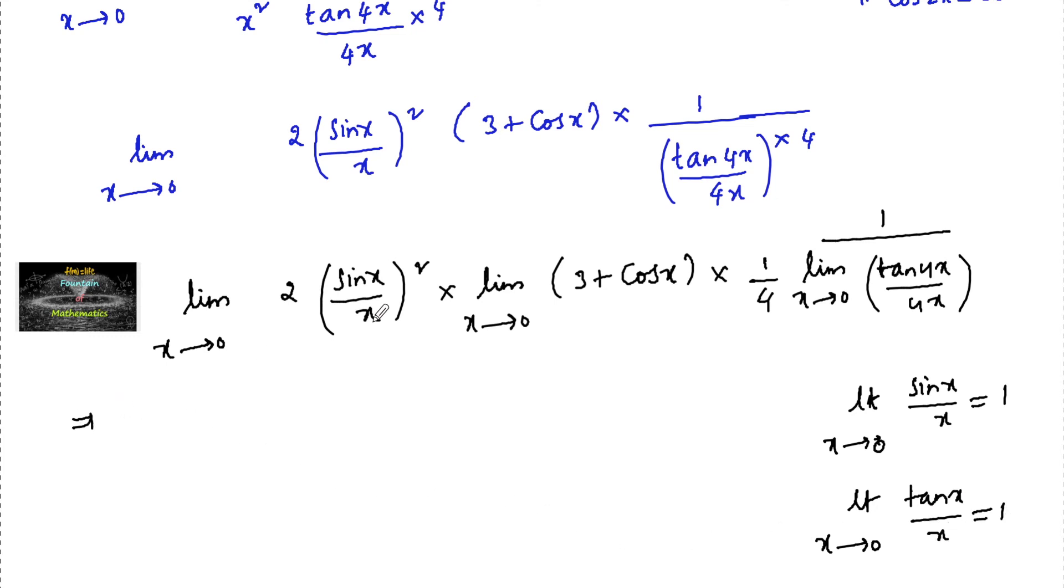So we can apply here sin x by x whole square, that is 2 into 1 squared. As x extends to 0, we can substitute directly: 3 plus cos 0 is 1, into 1 upon 4, into 1 divided by 1.